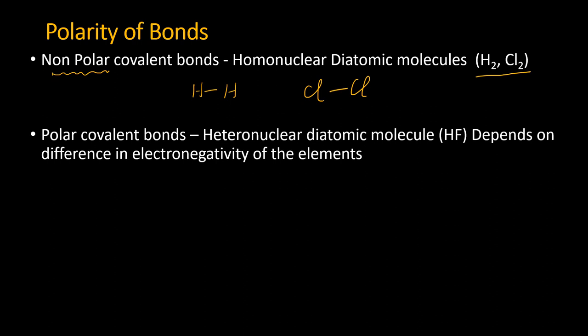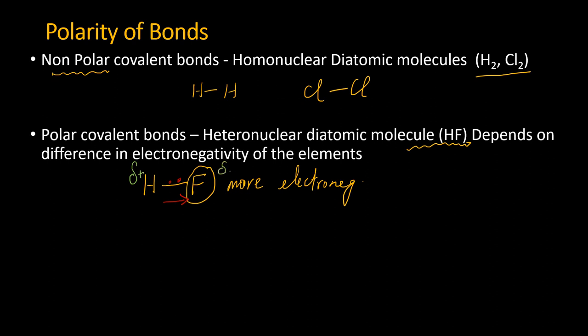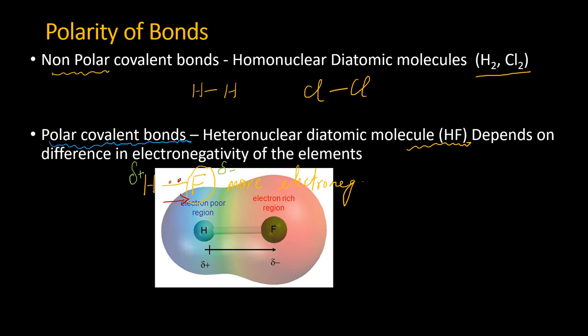On the other hand, heteronuclear diatomic molecules such as HF have polar bonds. Fluorine is the most electronegative element in the periodic table and has a greater tendency to pull the shared electron pair toward itself. As a result, hydrogen acquires a partial positive charge and fluorine acquires a partial negative charge, making HF a polar covalent molecule.